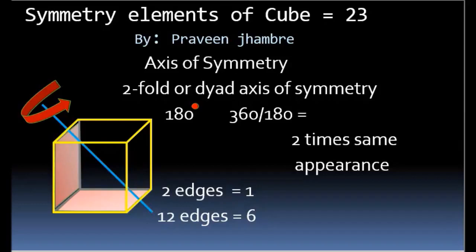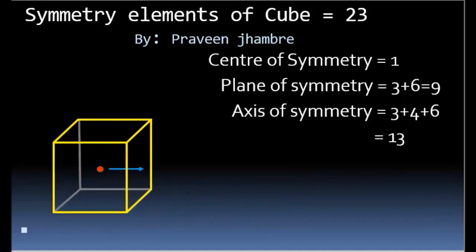The axis of symmetry total equals four-fold (3) plus three-fold (4) plus two-fold (6), giving 13 axes of symmetry. In summary: center of symmetry equals 1, plane of symmetry equals 9, and axis of symmetry equals 13, giving a total of 23 symmetry elements for a cube.